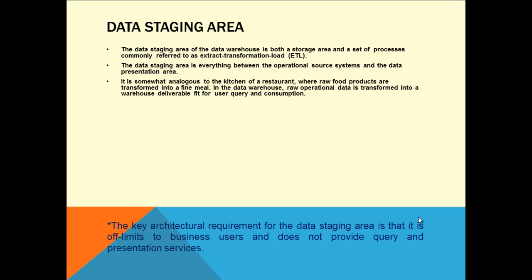It is somewhat analogous to the kitchen of a restaurant where raw food products are transformed into a final meal. In the data warehouse, raw operational data is transformed into a warehouse deliverable fit for query and consumption. You have fish, goat, chicken, vegetables — but there should be one chef who makes the recipe, one cook who cuts the vegetables and does the cooking. Finally, the presentation layer serves it on your plate. The data staging area is the happening place — it is your kitchen.